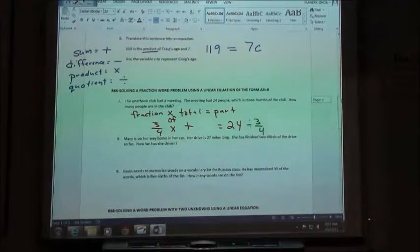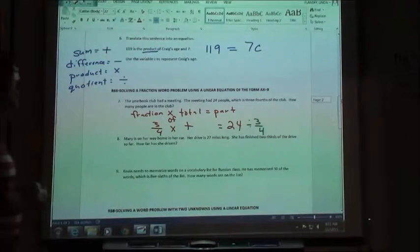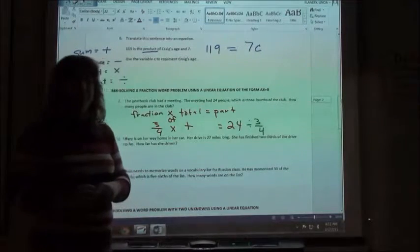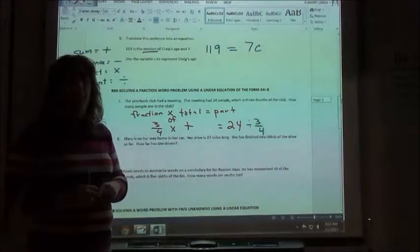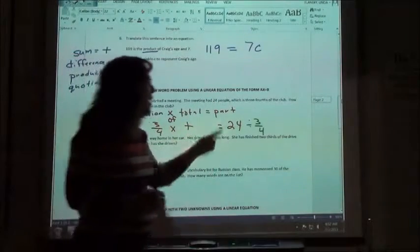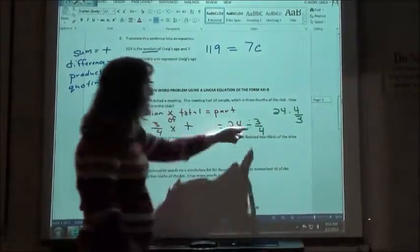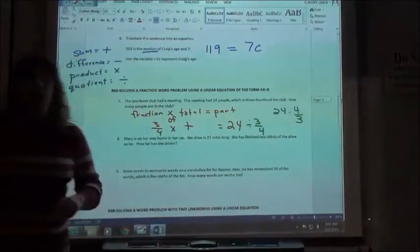When we divide with fractions, what do we end up doing? Multiplying by the reciprocal, right? So I have to change this into 24 times four-thirds. You'll see on Alex that they just flip it right away.